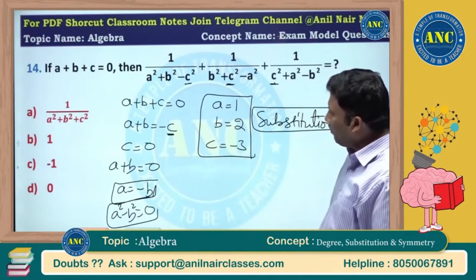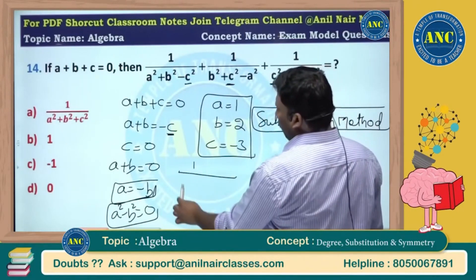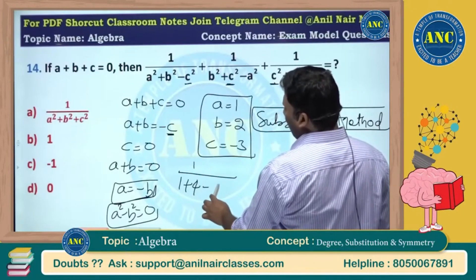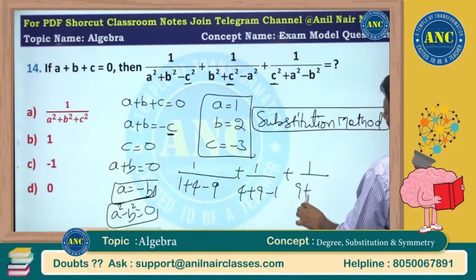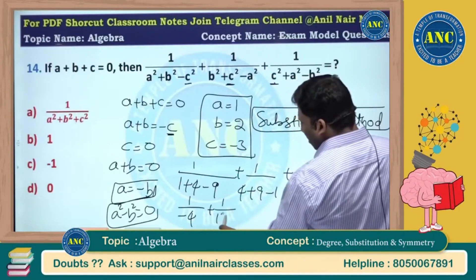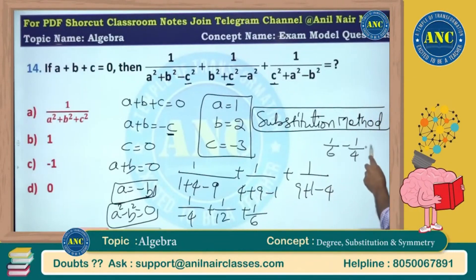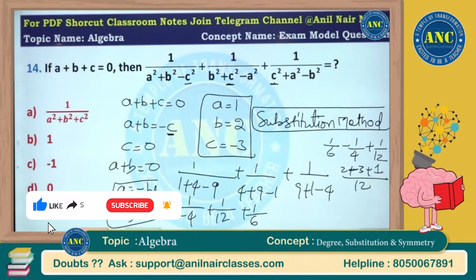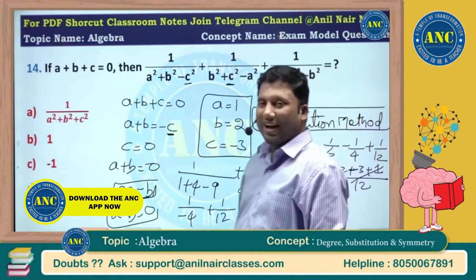Use a equals 1, b equals 2, c equals minus 3 — note that 3 minus 3 equals 0, confirming the constraint. Substituting: 1/9 plus 1 minus 4, then 1 by (5 minus 9) minus 4, giving 13 minus 1 equals 12, and 10 by minus 4 equals 6. This gives 1/6 minus 1/4 plus 1/12. Taking LCM 12: 2 minus 3 plus 1 equals 0. So the answer is 0.